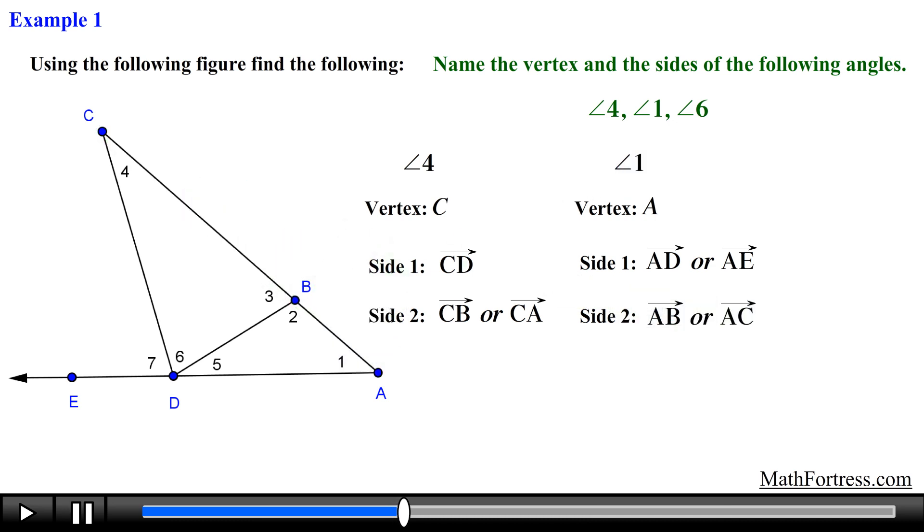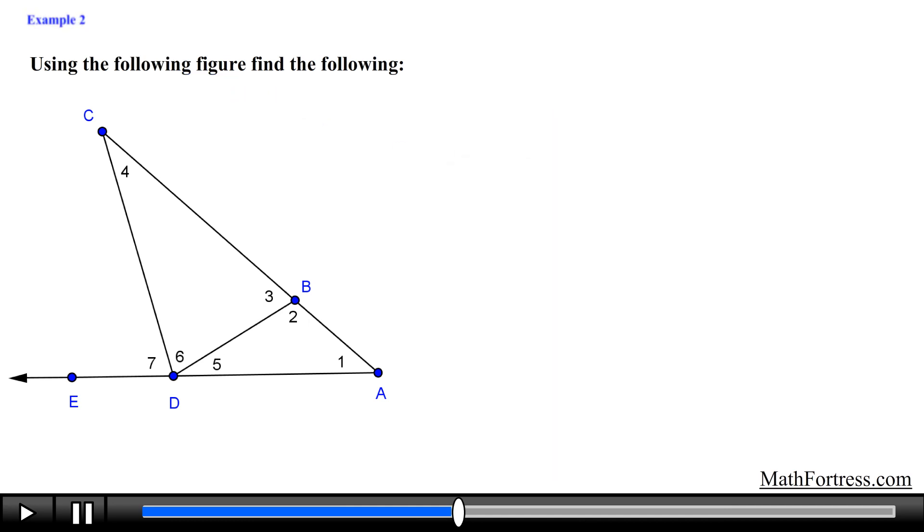Lastly let's locate angle 6. Angle 6 is located here and its vertex is represented by point D. The sides of angle 6 are formed by ray DC and ray DB. Notice that the angles of this geometric figure are labeled with numbers which makes it slightly easier to reference a particular angle. Let's move along to the next example.